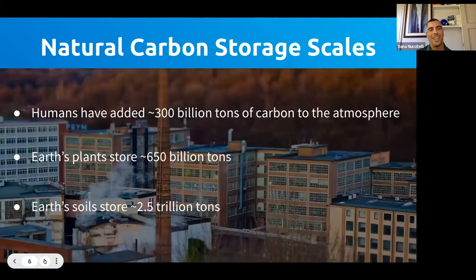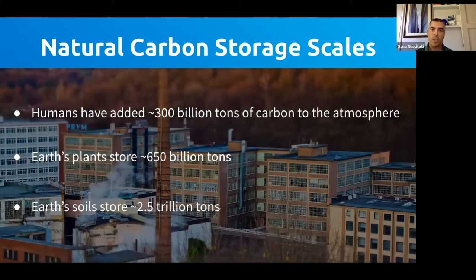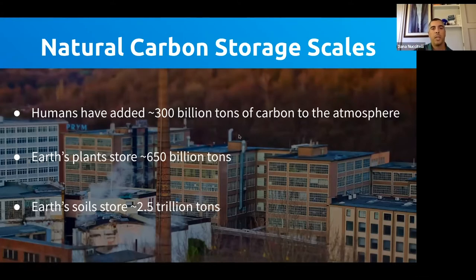To put the scale of the problem and potential solution into focus: humans have added about 300 billion tons of carbon to the atmosphere so far. Earth's plants and soil store about 3 trillion tons of carbon combined. If we can boost that natural storage even a bit with improved natural solutions, we can take a big chunk out of that 300 billion tons of carbon in the atmosphere.